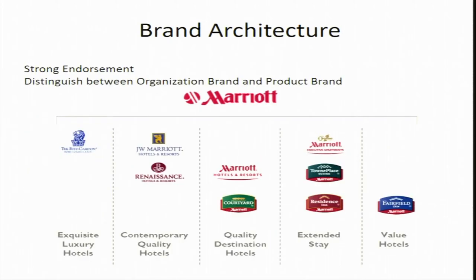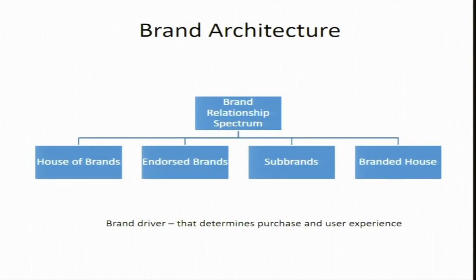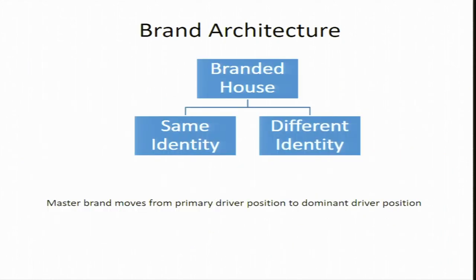Let us move forward and come to branded house. If you remember the primary slide where we introduced the brand relationship spectrum, there are four options: house of brands, endorsed brands, sub brands, and branded house. We have now reached the last option — branded house. We have been talking about the Tata group, and a large part of Tata's brands are actually a branded house. Tata is an easy example for those of us in India, as we are surrounded by Tata products and services. In this section we will see Tata along with a few more examples.